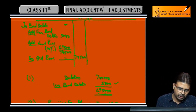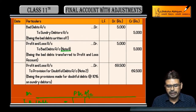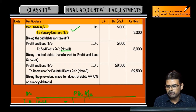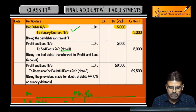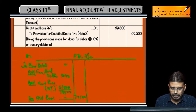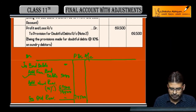Now when we do this in journal entry form, please note carefully. First, pass the bad debts entry: Bad Debts Account debit to Debtors — 5,000 rupees. Then charge these bad debts to P&L: P&L Account debit to Bad Debts — 5,000 rupees.